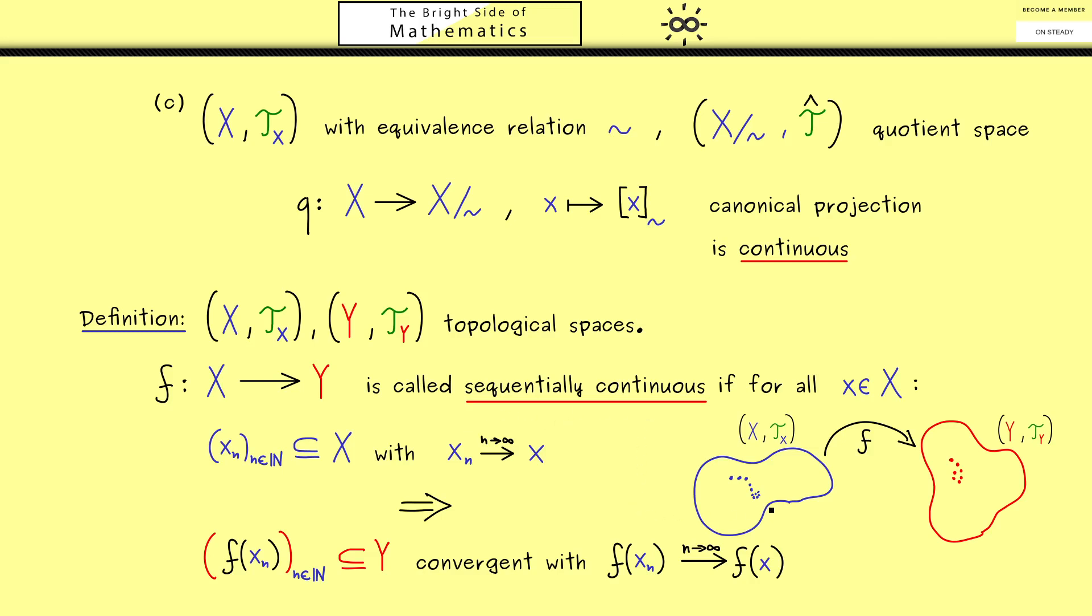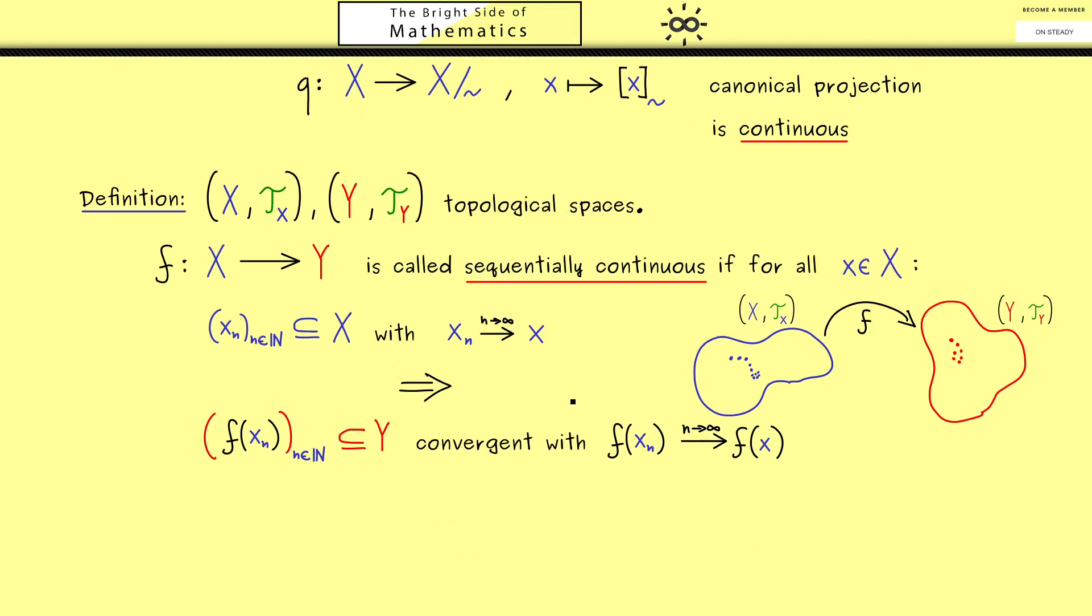Formulating a continuity property by using sequences. This makes sense when you want to calculate with a function because this property here means you can pull the limit inside the function. However, in general topological spaces it turns out that this is not equivalent to the definition from above.